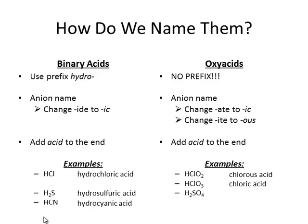H2SO4 — we have the sulfate anion, so we're going to have sulfuric acid. Again, sulfur puts the -ur back in, so we get sulfuric acid. And finally, HSCN — SCN is thiocyanate, -ate becomes -ic, so we get thiocyanic acid.